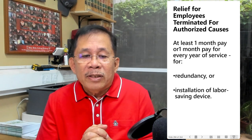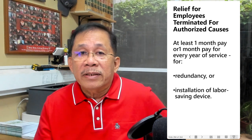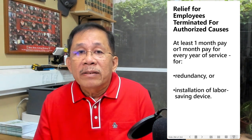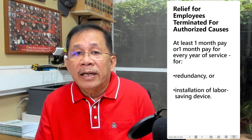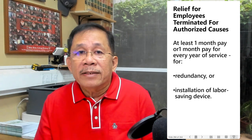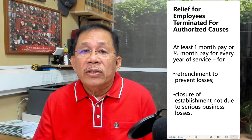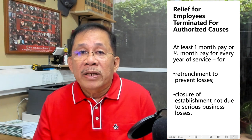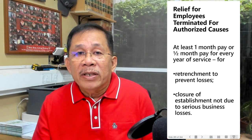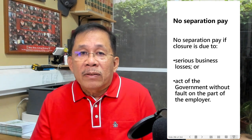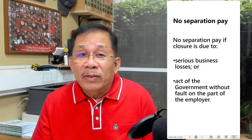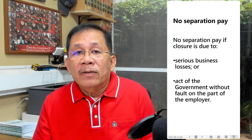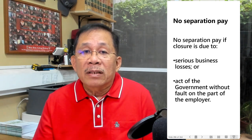What would be the relief for employees terminated because of authorized causes? The relief is separation pay. If termination is due to installation of labor-saving devices or redundancy, separation pay is at least one month pay or one month pay for every year of service, whichever is higher. If termination is due to retrenchment to prevent losses or closure of establishment not due to serious business losses, separation pay is at least one month pay or one-half month pay for every year of service, whichever is higher. But if the closure is due to an act of the government without fault on the part of the employer, or due to serious business losses, no separation pay is due. A fraction of six months is considered as one whole year.